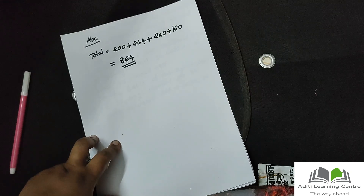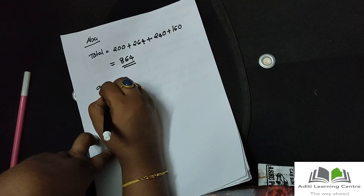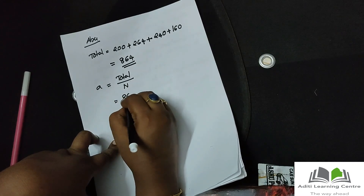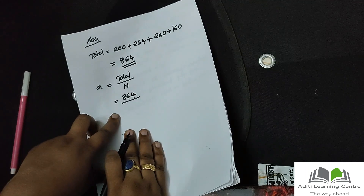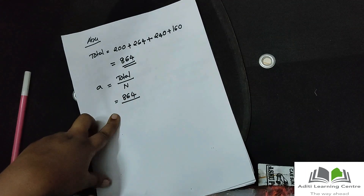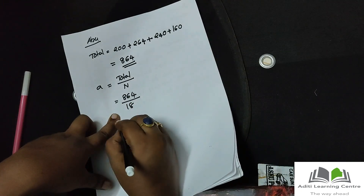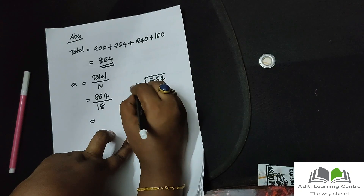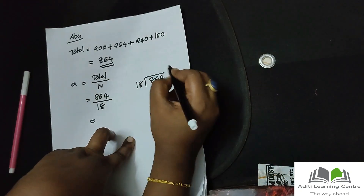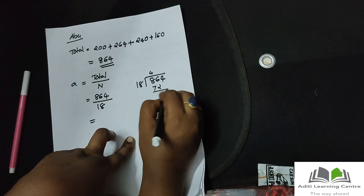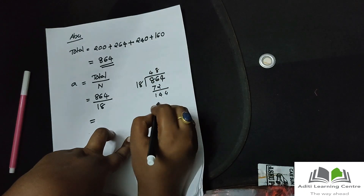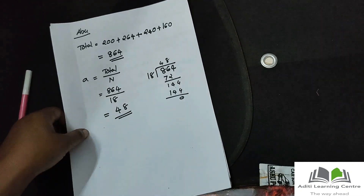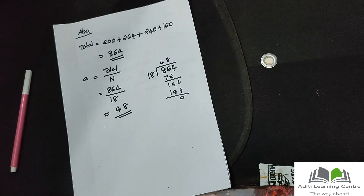The average equals total divided by number. Let's divide by 864. We divide by 864. Divide. We will make 48. Divide 45.